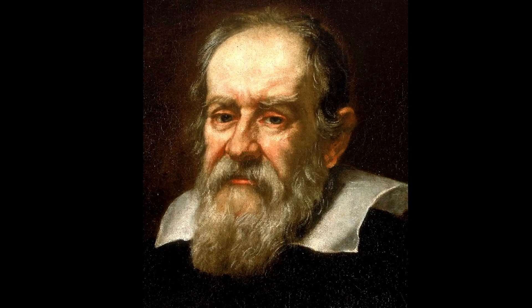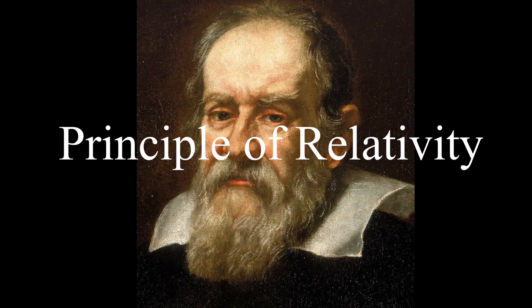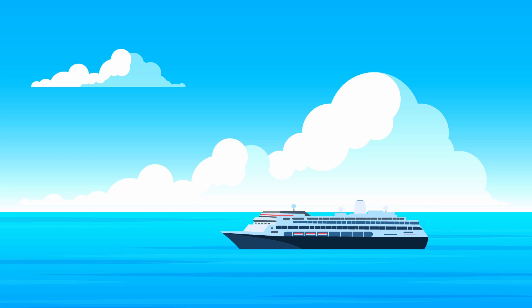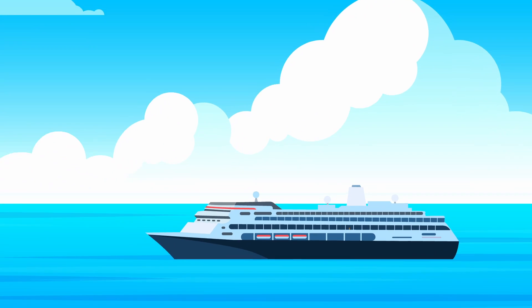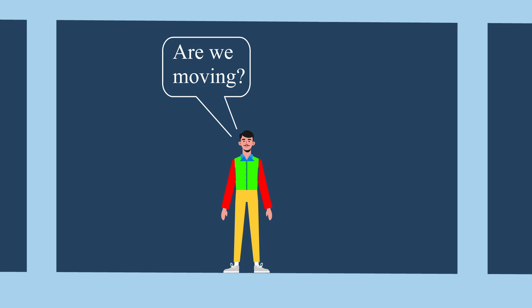In 1632, Galileo Galilei introduced the so-called principle of relativity. He used an example of a ship traveling at a constant speed on a calm sea without rocking, and said that any observer below the deck would not be able to say whether the ship was moving or stationary. In other words, you would not be able to conduct any experiment that would distinguish a motion.